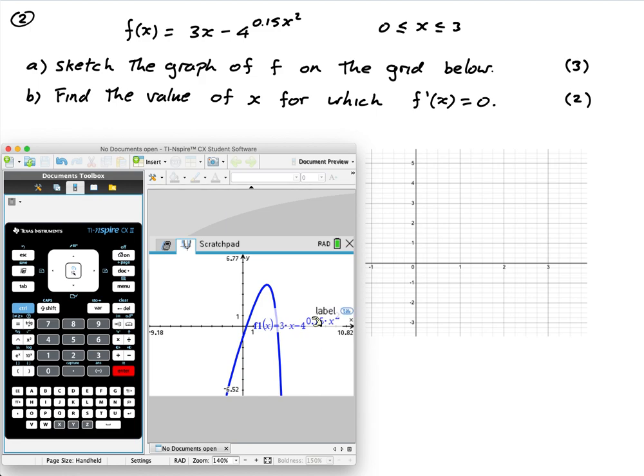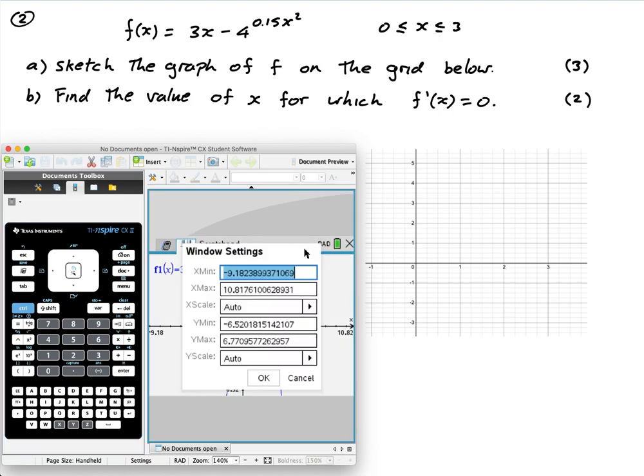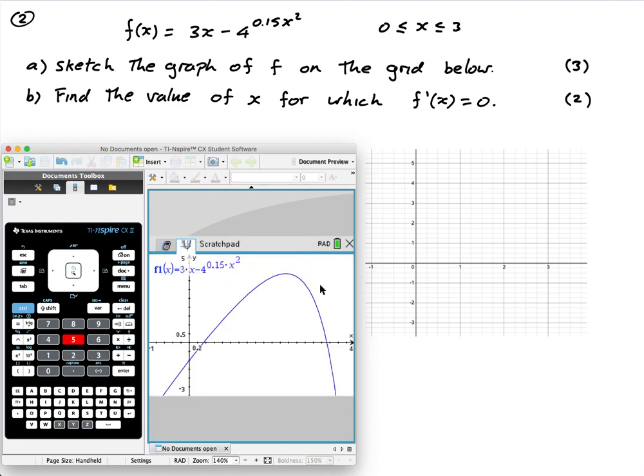Looks something like so. Now, I might just change my grid, my view here. So zoom. Let's put the window settings and I'll put it what I see on the grid. It goes from about negative one to four, and then negative three to five. Okay, there we go.